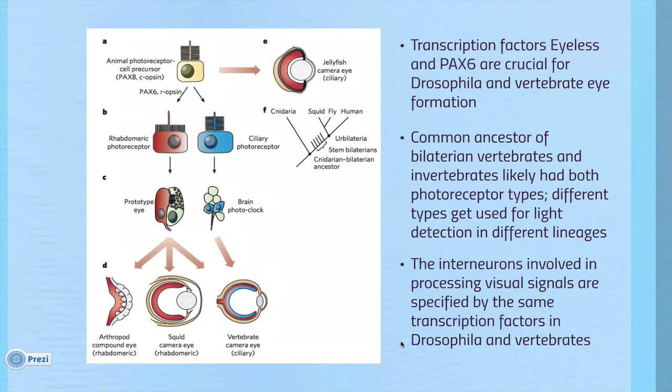That's pretty remarkable — even traits historically touted as analogs rather than homologs, like squid eyes and human eyes, share a lot of genes with common ancestors. So they are cryptically or deeply homologous, even though the eyes themselves evolved independently.